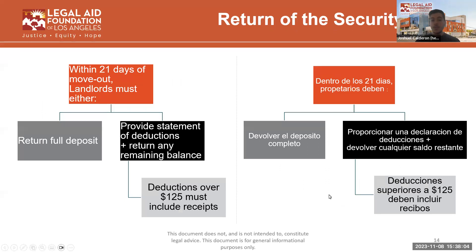Within 21 days of moving out, the landlord has one of two options: they can either return your deposit in full, or they can provide a statement of deductions and return any remaining balance. Any deductions over $125 must include receipts.